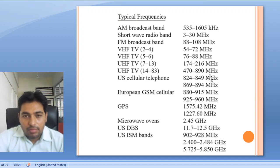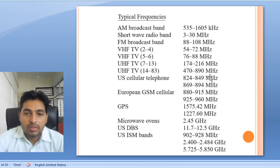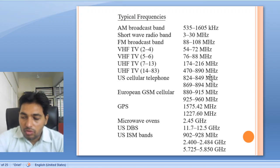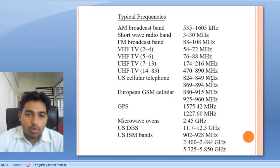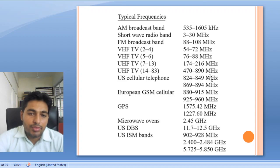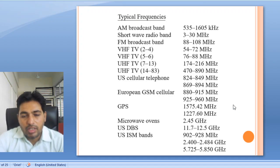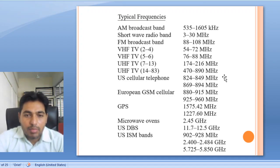Most microwaves we use start from 1 GHz to 300 GHz. Nowadays we also use mobile communication — mobile phones also fall in the microwave region. Then we are using GPS, and many other applications like USB and so forth. So many applications are there; we will see them one by one.